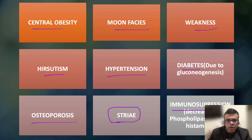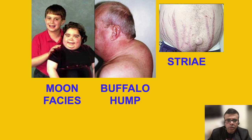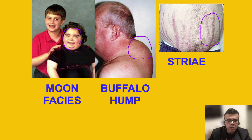Key clinical signs include buffalo hump — an accumulation of fat around the back of the shoulder forming a hump-like elevation — moon face, which is rounding of the face, and abnormal pigmentation across different parts of the body. These are the three most important clinical signs and symptoms of Cushing syndrome.